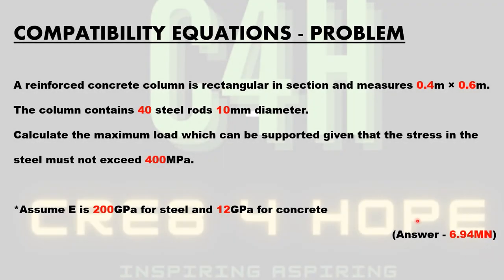So let's have a look at this problem. The question states that a reinforced concrete column is rectangular in section and measures 0.4m by 0.6m. The column contains 40 steel rods 10mm in diameter.